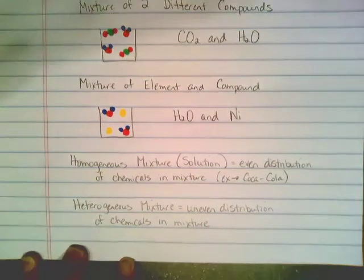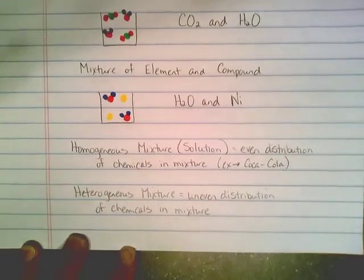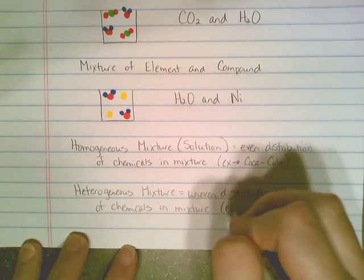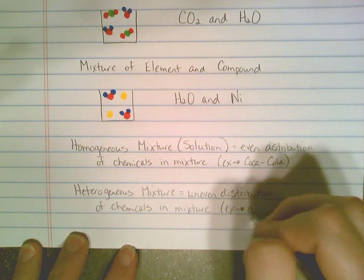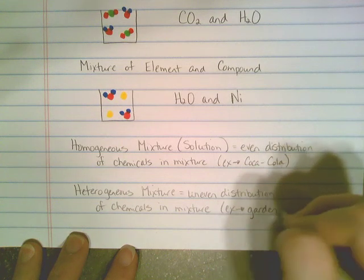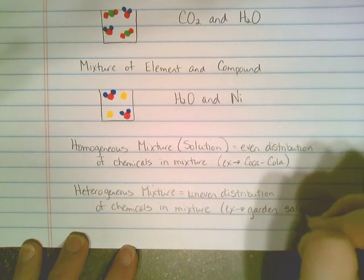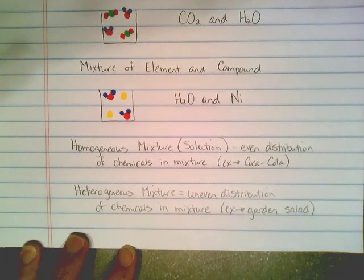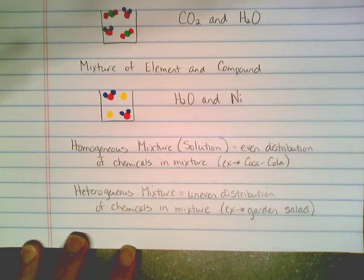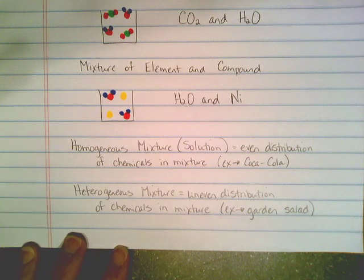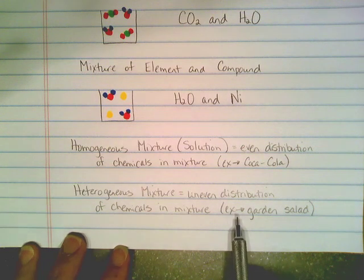The most common example of a heterogeneous mixture would be a garden salad. When you take one bite of your garden salad, you might get a crouton, a cucumber, and a piece of lettuce in one bite, maybe a tomato in the next. There's no official definition of what has to be in each bite of your garden salad — the ingredients that make up a garden salad are unevenly distributed.